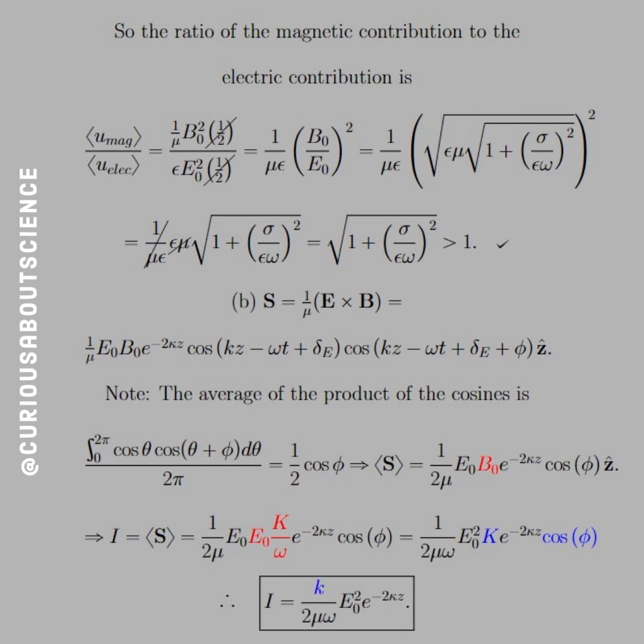And the intensity is equal to the scalar of this. And so here we just get rid of the B naught with the E naught K omega. And we simplify things and we see that we have one over two mu omega E naught squared K E to the negative two capital Z cosine phi. And with that, the blues, we see that we substitute that in for the K and the answer. And we see that the intensity is equal to K over two mu omega E naught squared E to the negative two capital Z. And we're good to go.